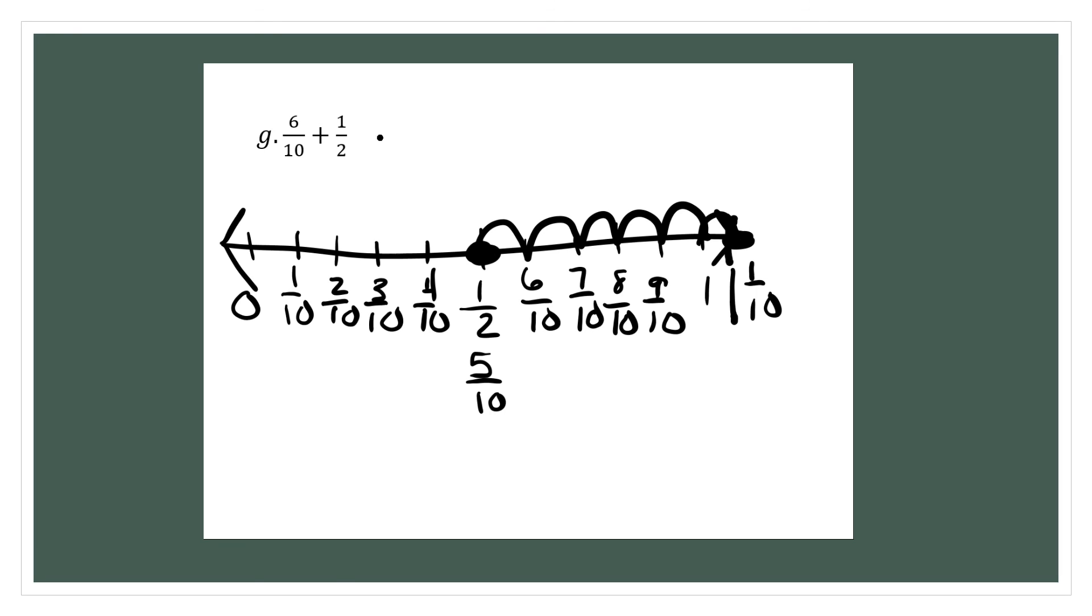So my answer would be 1 and 1 tenth. So they're going to draw their number line, add their half mark, or the smaller fraction first, and then split up their number line just like they split up their tape diagram.